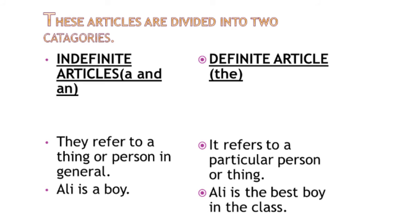Indefinite articles refer to a thing or person in general — not any particular thing or person. They are used before singular countable nouns. For example: a boy, a book, a man, an orange, an elephant, etc.